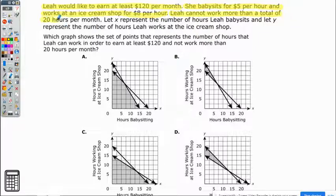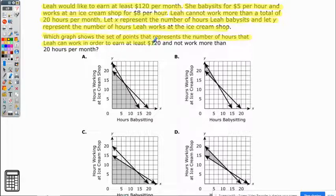Leah cannot work for more than a total of 20 hours per month. Let x represent the number of hours Leah babysits, and let y represent the number of hours Leah works at an ice cream shop. Which graph shows the set of points that represents the number of hours that Leah can work in order to earn at least $120 and work no more than 20 hours per month?